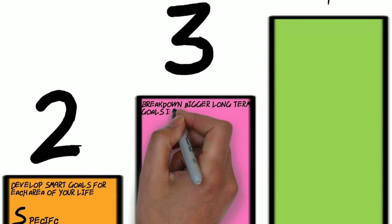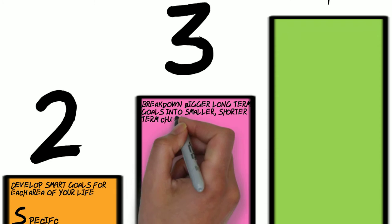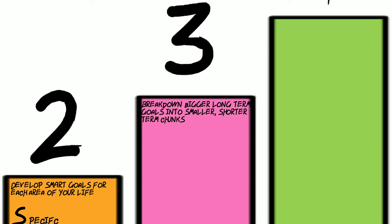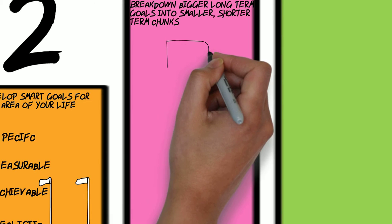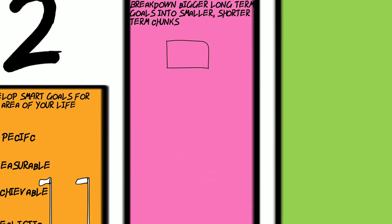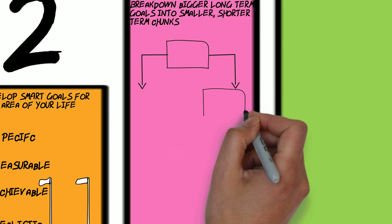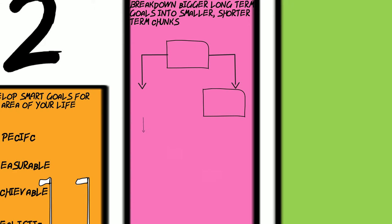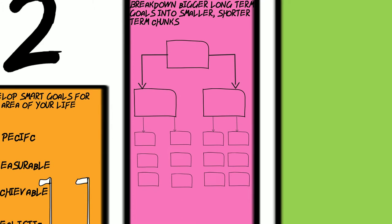Step three is break down your bigger, longer-term goals into smaller, shorter-term chunks or milestones. Any goal that's worth having is going to take time to reach. Breaking it down into smaller steps makes it more manageable.